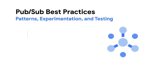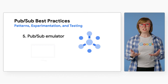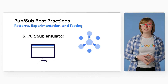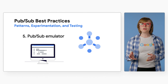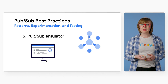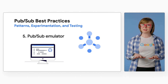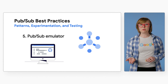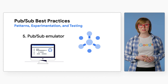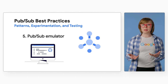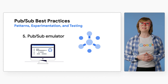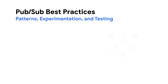Number five: PubSub emulator. To develop and test your application locally, you can use the PubSub emulator, which provides local emulation of the production PubSub service. You can run the PubSub emulator using the Google Cloud CLI.